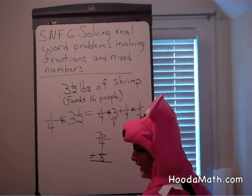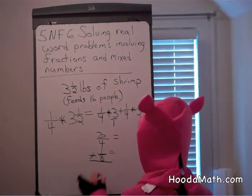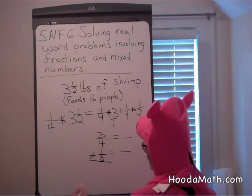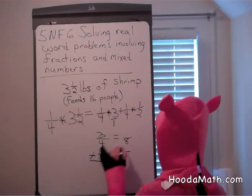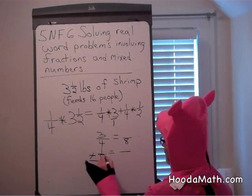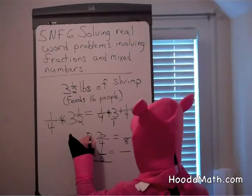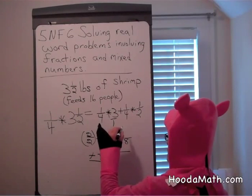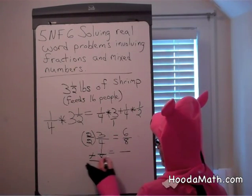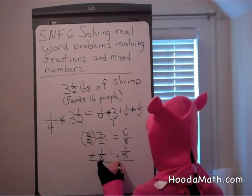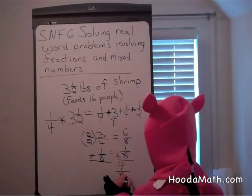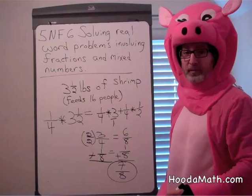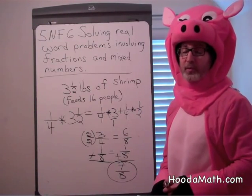Now, to add you need a common denominator. What number do both four and eight go into? They both go into eight. How many fours are in eight? Two. So we multiply two over two — which is a form of one — times three-fourths, and you get six-eighths. And one-eighth equals one-eighth, so you need seven-eighths of a pound of shrimp to feed four people. Now there are other parts in your paella which you'll have to calculate as well.